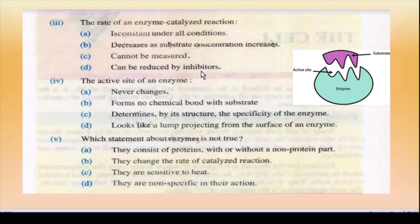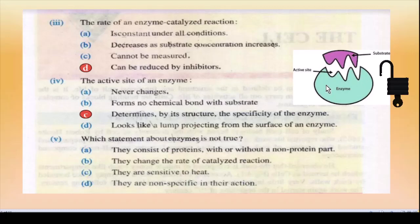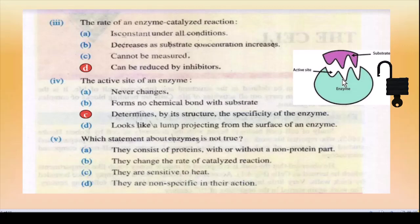MCQ 4 — The active site of an enzyme. Active site woh site hai jahan akar substrate attach hota hai. Active site determine karta hai structure and specificity of enzyme — active site usi shape mein aata hai jo substrate ke liye chahiye. Yeh hai lock and key model: enzyme lock hai aur substrate iski key (chaabi) ki shape hai jo aapas mein attach hokar lock and key model banate hain.